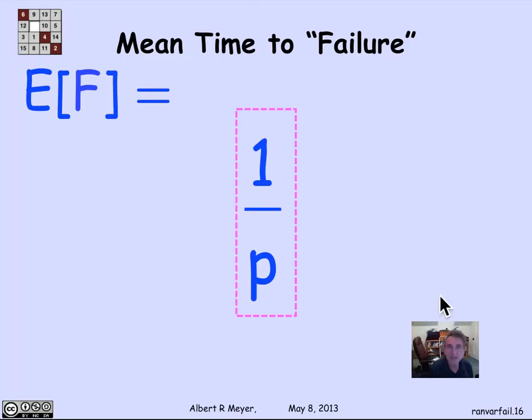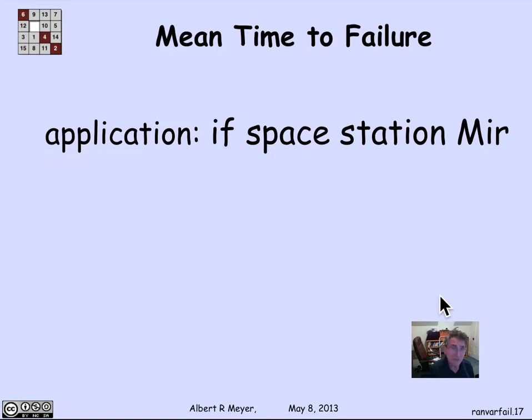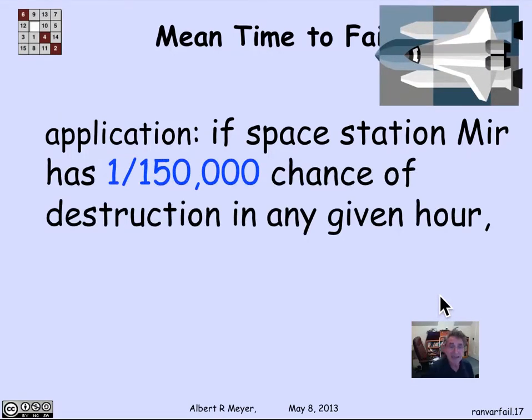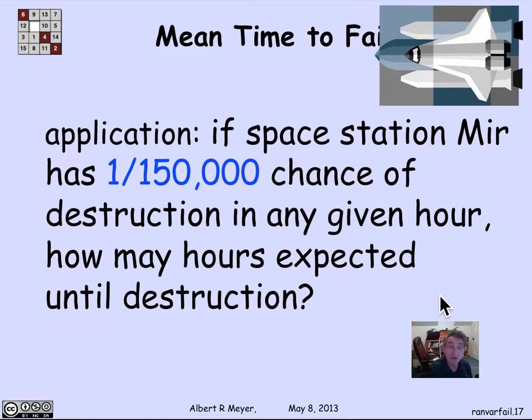So let's do one more almost silly example for fun to remember what the significance of 1 over P is. Suppose I'm thinking about the space station mirror. Now it's spinning around, and there's a lot of garbage out there that it's likely to hit, a lot of space junk. And suppose that based on our previous statistics and estimations of the sort of small stuff that has been hitting near that it could survive, that we estimate that there's about a 1 in 150,000 chance that in any given hour it's going to run into some intolerable collision with space junk or a meteor that's going to destroy it. So suppose the space station mirror has a 1 in 150,000 chance of destruction in any given hour. So how many hours do we expect until destruction? Well, it's 1 over 150,000 or 150,000 hours.